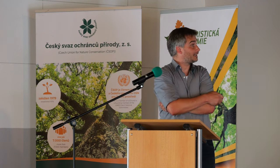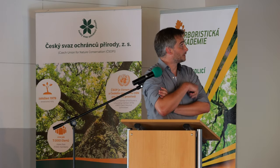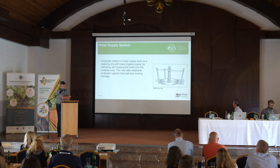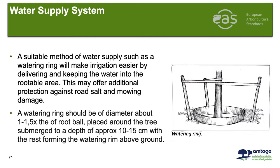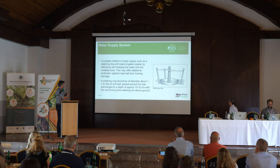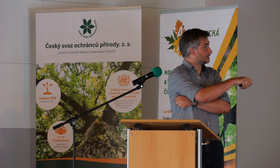Water supply systems: a watering ring makes irrigation easier by delivering and keeping water in the rootable area and may also provide additional protection against root salt damage. The watering ring should have a diameter between 1.0 and 1.5 times the root ball, placed around the tree at 10–15 centimeters depth, formed as a ring around the tree. Watering bags are also an option — especially useful in drought conditions.